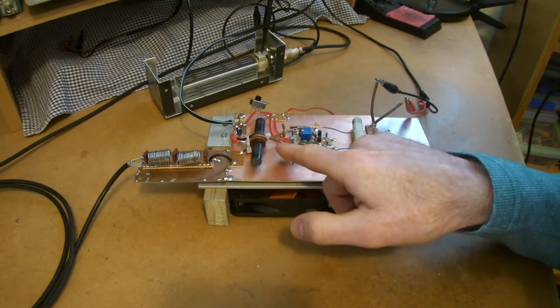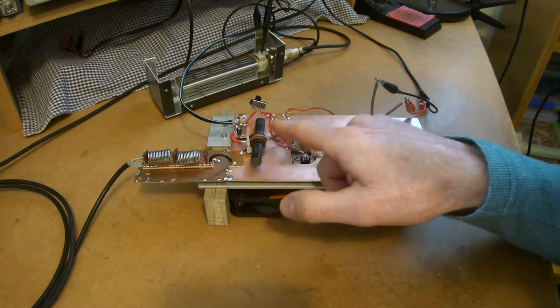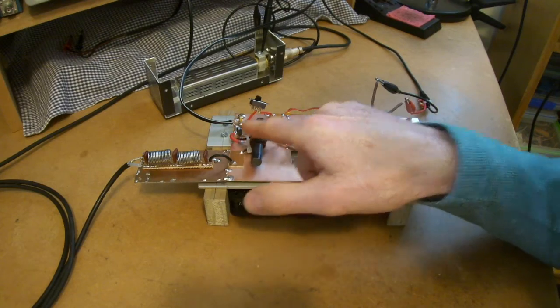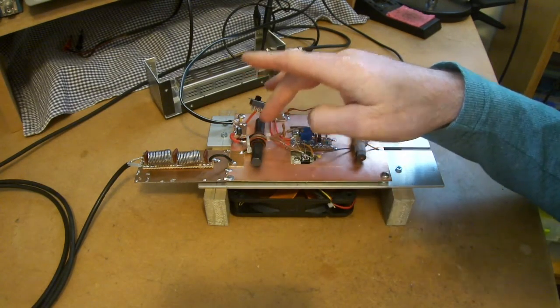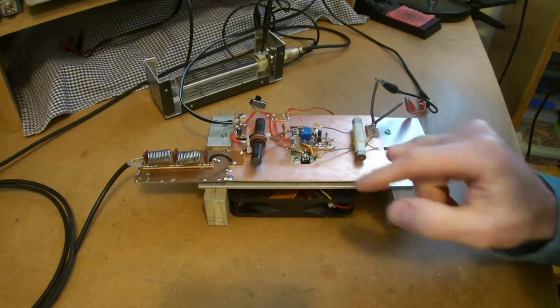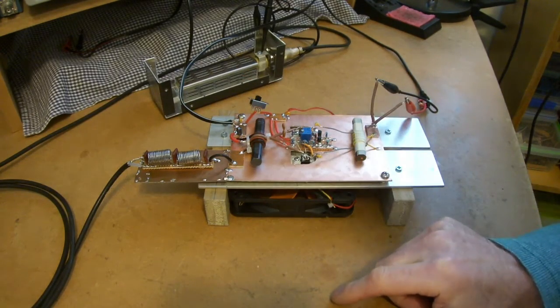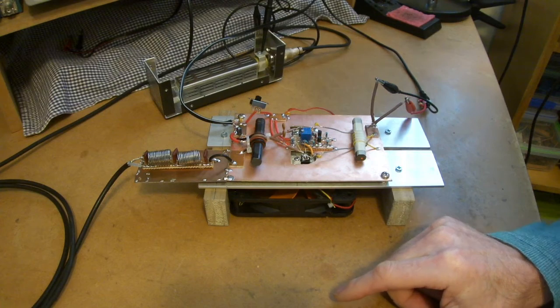The output transformer there has a single turn on the brown wire coming around with a center tap at the end with the VCC coming in, and then 3 turns on the secondary. So exactly as per the original amplifier from W6JL.